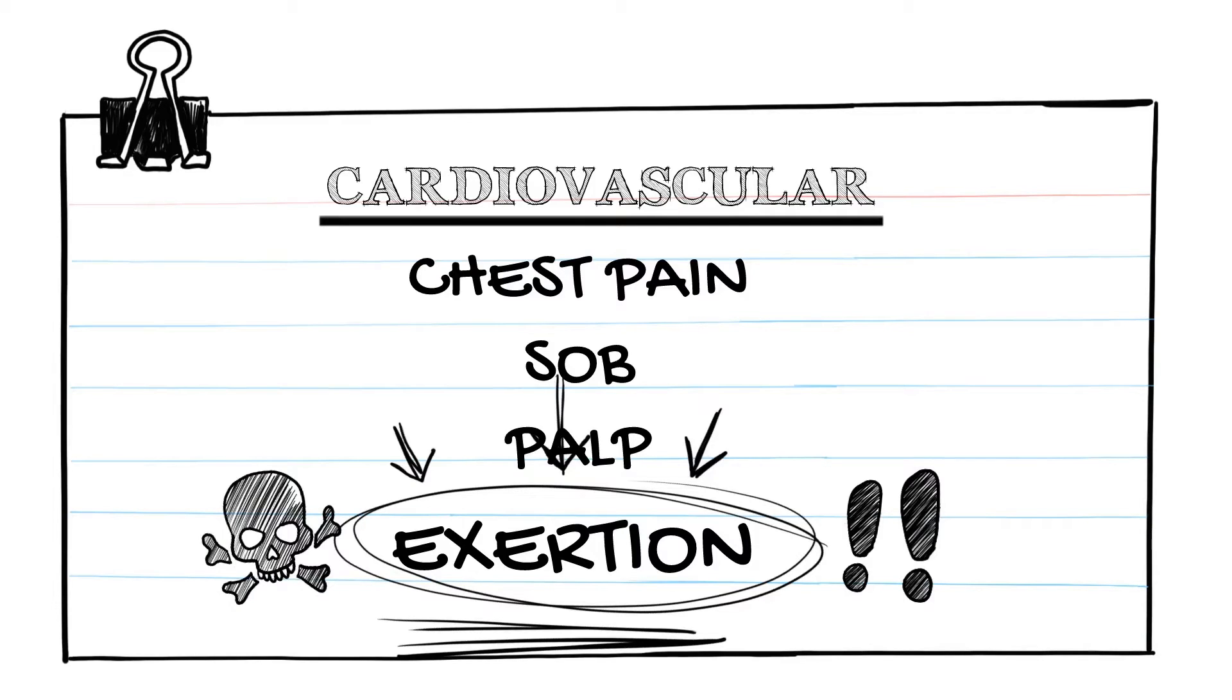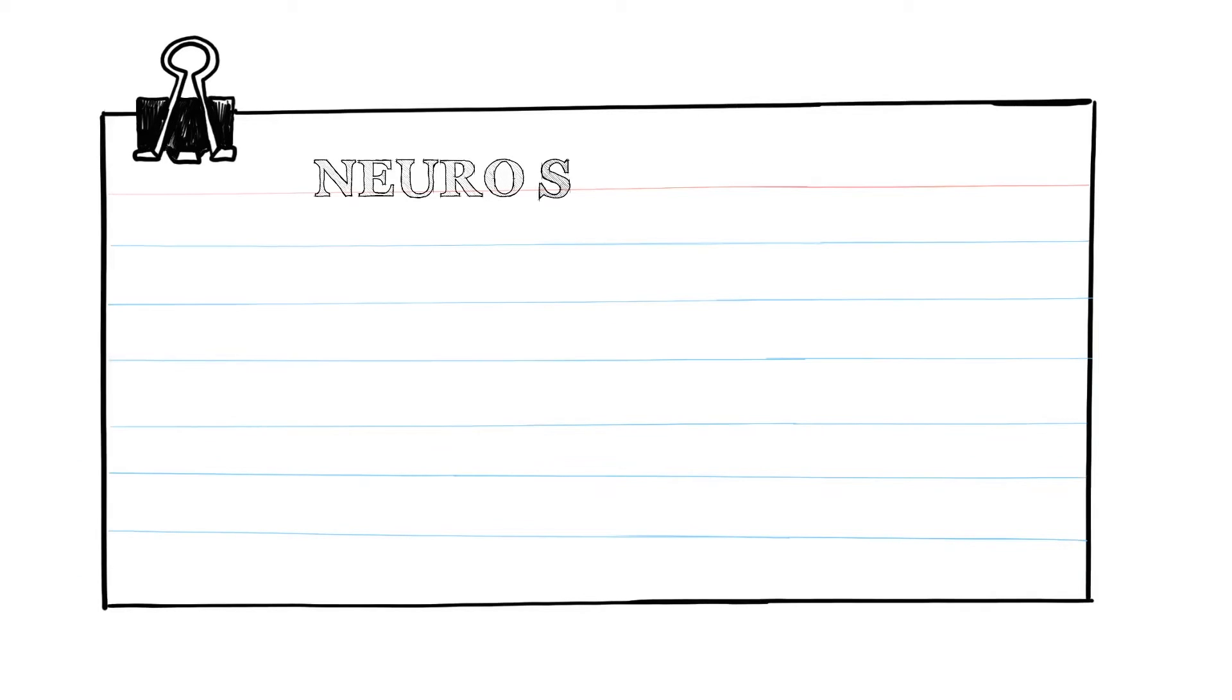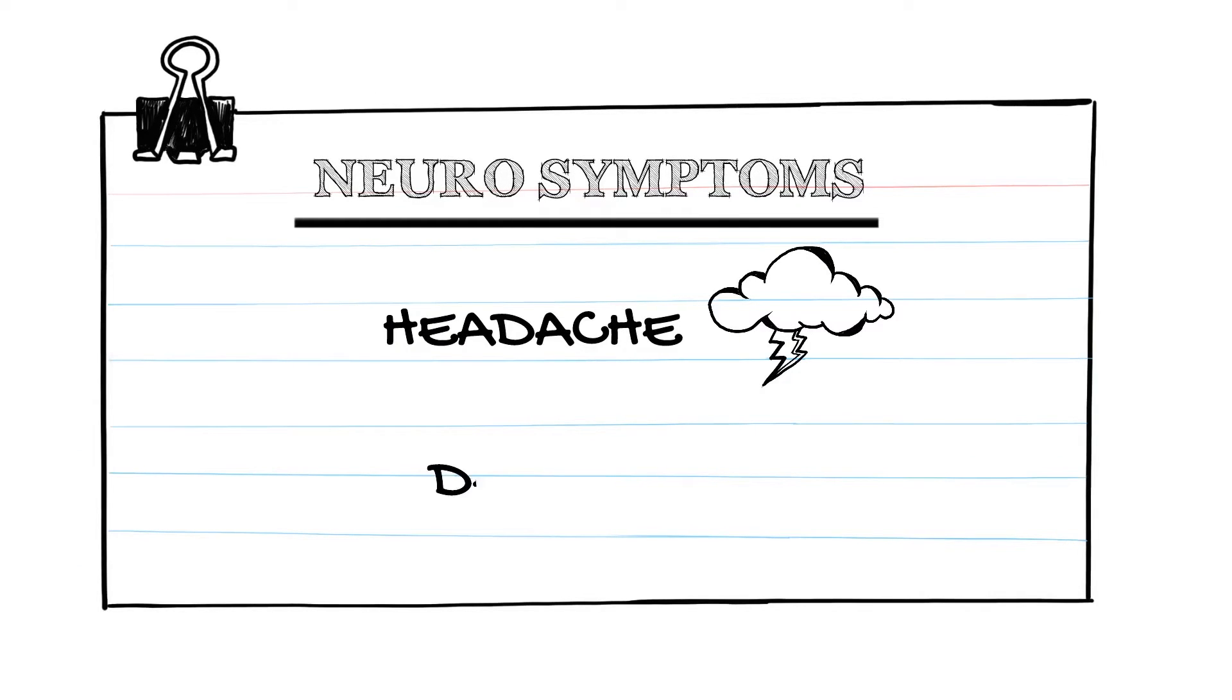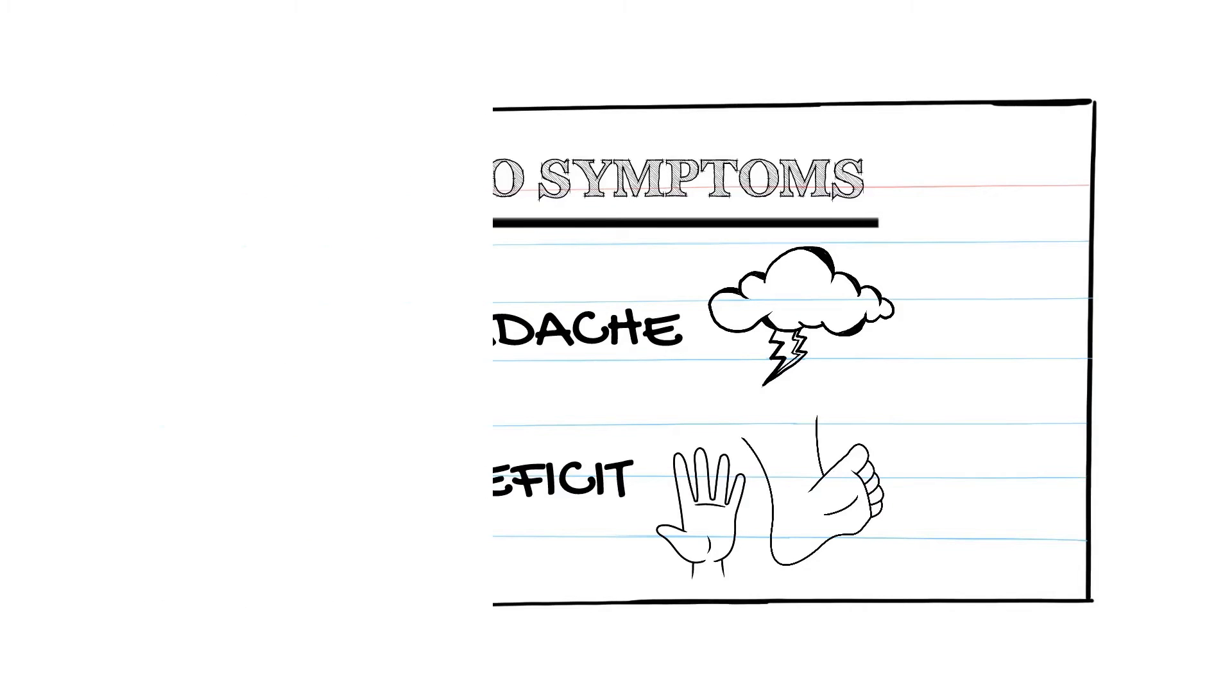Exertional syncope is really important - it's basically bad, bad, bad, bad, bad. It's aortic stenosis, hypertrophic obstructive cardiomyopathy, something like that. Then you ask for neurological symptoms: do they have new onset headache, thunderclap headache, or were they not able to move their arm or leg before they syncopized? You start thinking they've had a neurovascular event.